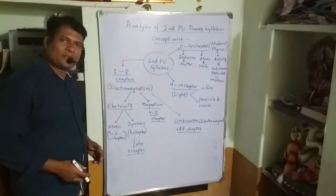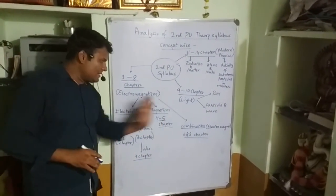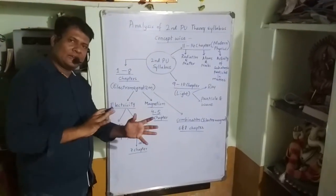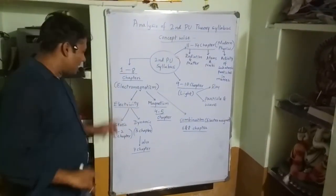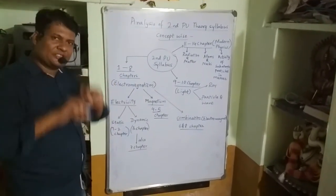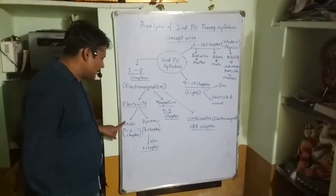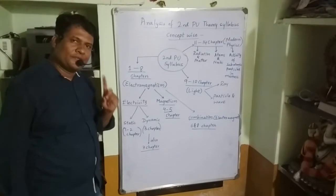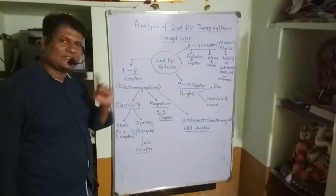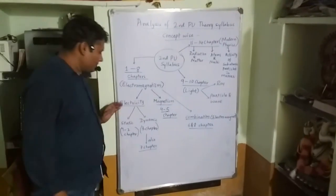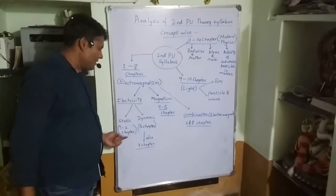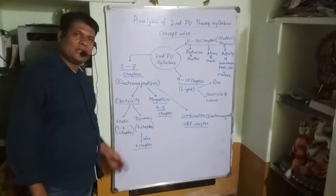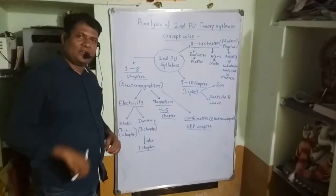Electromagnetism contains three sub-parts: first is Electricity, second is Magnetism, and third is a combination of Electricity and Magnetism. The Electricity sub-part is divided into Static Electricity — containing Chapters 1 and 2 (Electric Charges and Fields, and Electric Potential and Capacitance) — and Dynamic Electricity, containing Chapter 3 (Current Electricity) and Chapter 7 (Alternating Current).